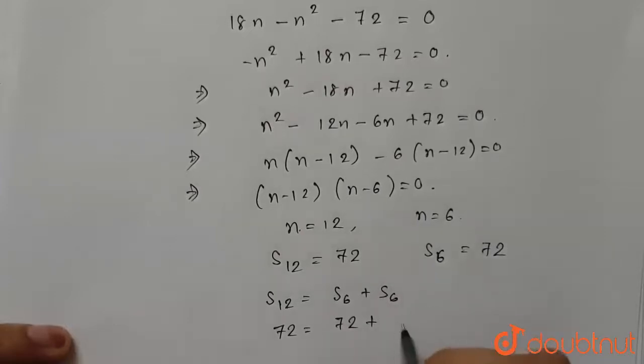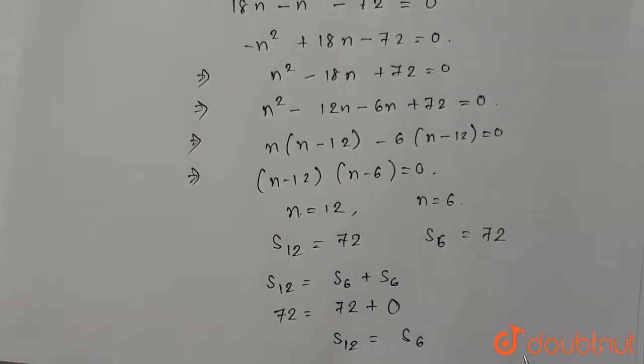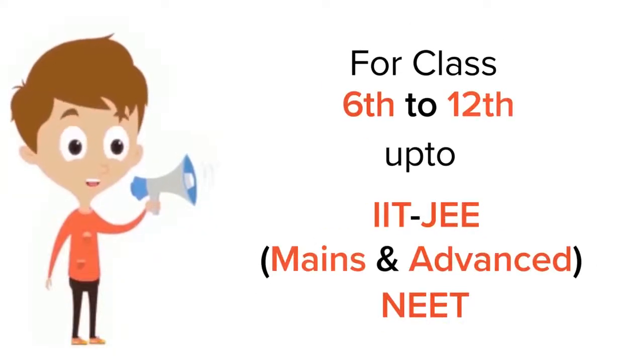So therefore we can say that sum of 12 terms is equal to sum of 6 terms. Therefore n can be 12 or 6, and this is the required answer. Thank you.